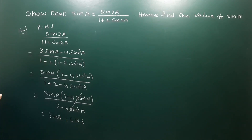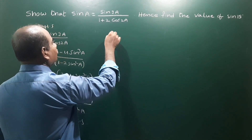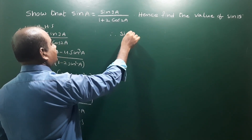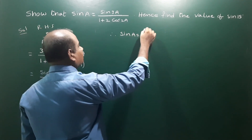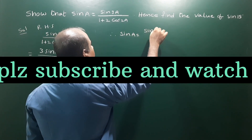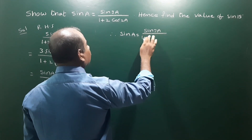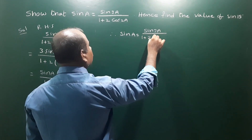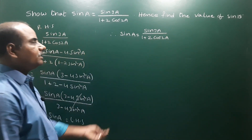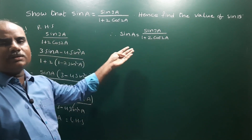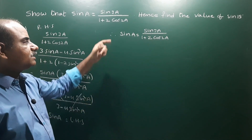Therefore LHS is equal to RHS. This proves that sin a can be expressed as sin 3a divided by 1 plus 2 cos 2a.